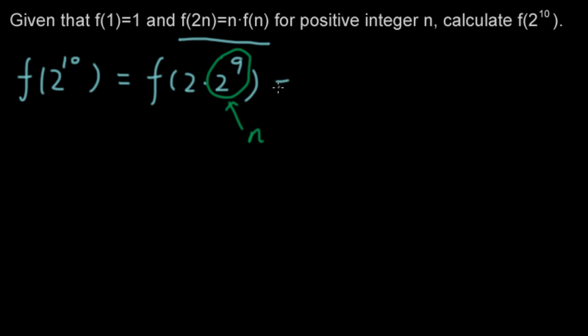So then this is equal to 2^9 times f(2^9). Notice this is n and this is f(n). So essentially this is f(2n) equals n times f(n).